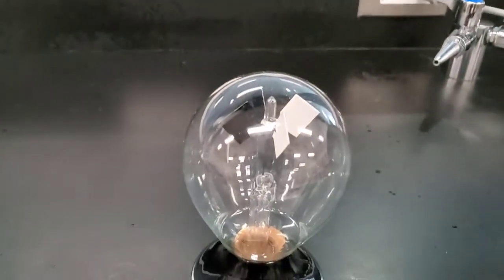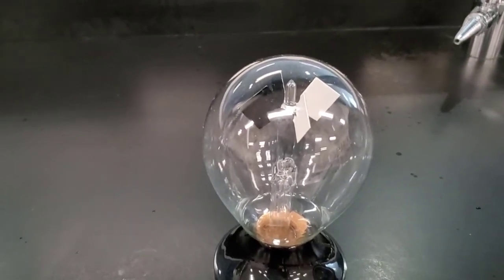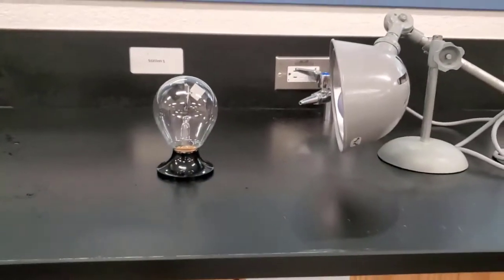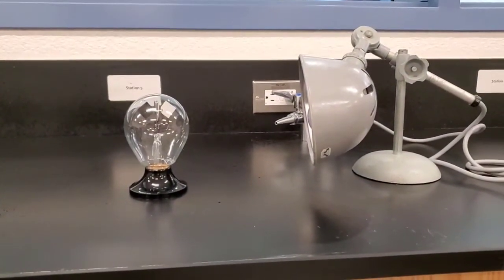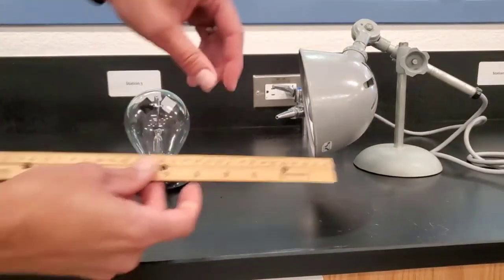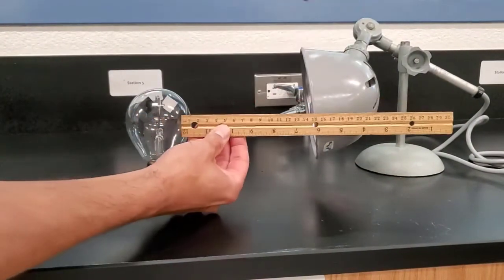What I have here is a radiometer. And in a moment, you're going to see that I'm going to adjust it so that the radiometer is about 10 centimeters away from the light that I have there.